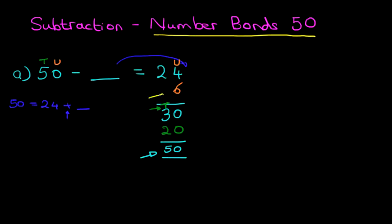Well it's this number here. It's a 6 over here and the 4 over here. So we had to add 26. 50 minus 26 equals 24.